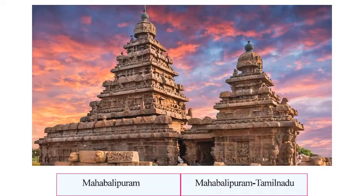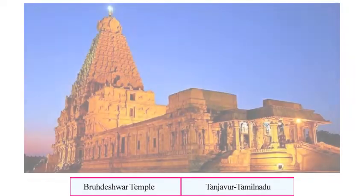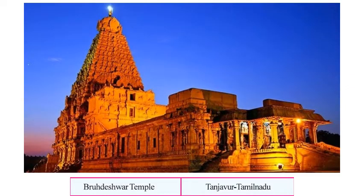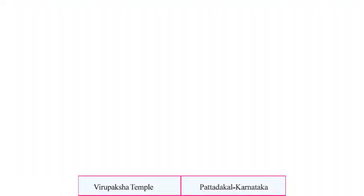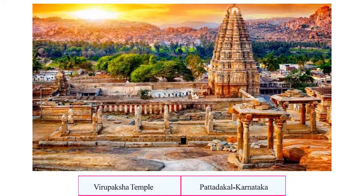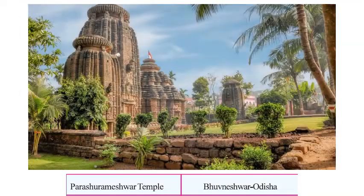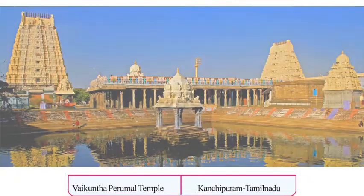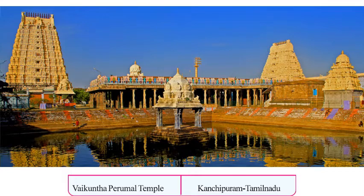Among the notable South Indian temples of ancient India: the Kailashanath Temple of Kanchipuram, Tamil Nadu; the Mahabalipuram temples of Tamil Nadu; the Brihadeshwara temples of Thanjavur, Tamil Nadu; the Virupaksha Temple of Pattadakal, Karnataka; the Parshurameshwara Temple of Bhubaneswar, Odisha; and the Vaikunta Perumal Temple of Kanchipuram, Tamil Nadu.